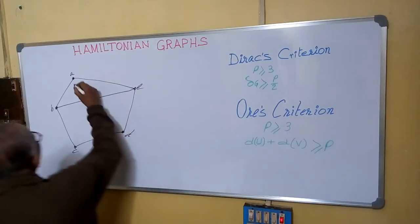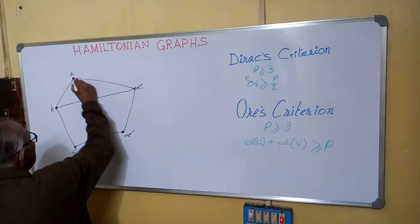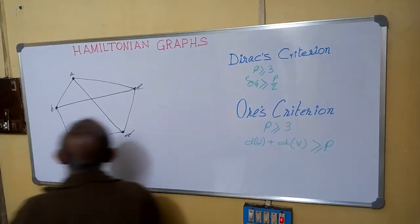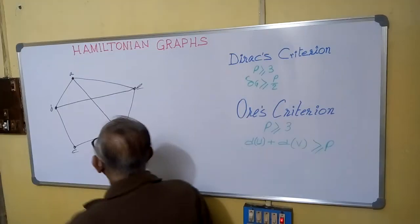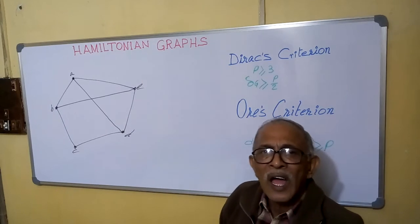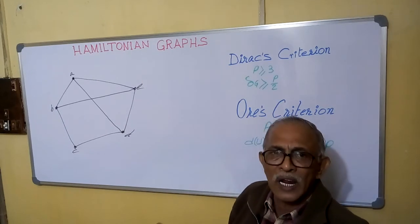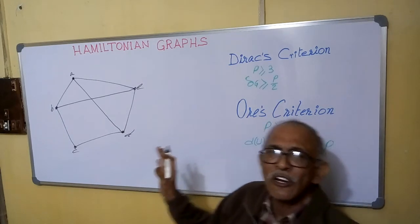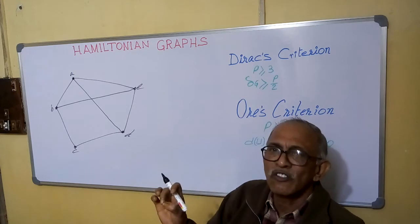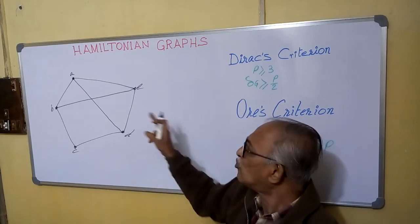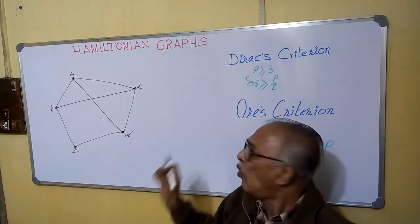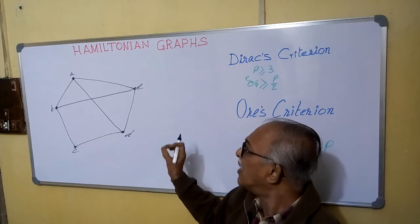If we are adding one more edge A-D, then also it will remain a Hamiltonian graph. So this is called a Hamiltonian graph. The most important thing is there should be a cycle containing all the vertices of the graph.